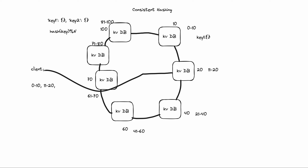This is how consistent hashing works. When we add or remove machines, only the portion of the key ranges affected is redistributed — not the entire cluster. For example, if we remove the added machine, only the keys in 71 to 80 are redistributed, not everything. This is the key advantage of consistent hashing.